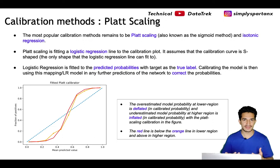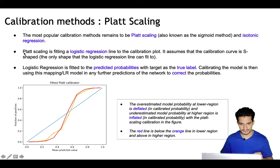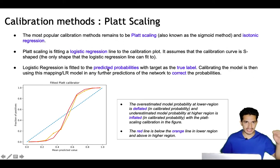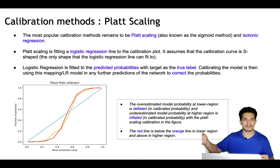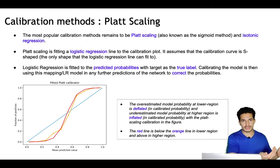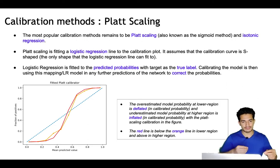If a model is not calibrated, the most popular calibration methods are Platt scaling — also known as the sigmoid method — and isotonic regression. Platt scaling fits a logistic regression line to the calibration plot and assumes the calibration curve is S-shaped. Logistic regression is fitted with the predicted probabilities as the independent variable and the true label as the target variable.